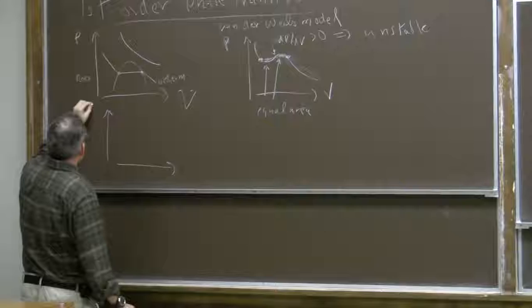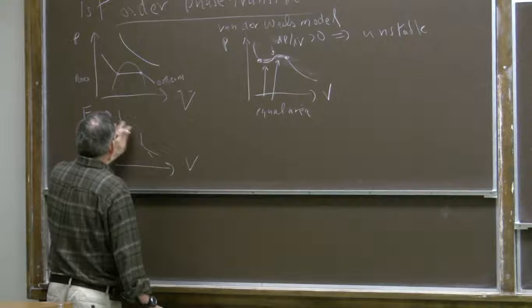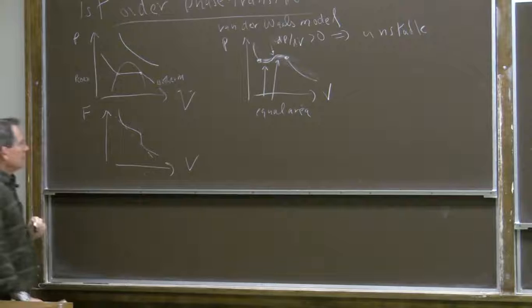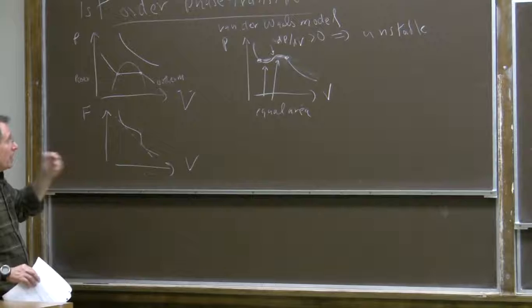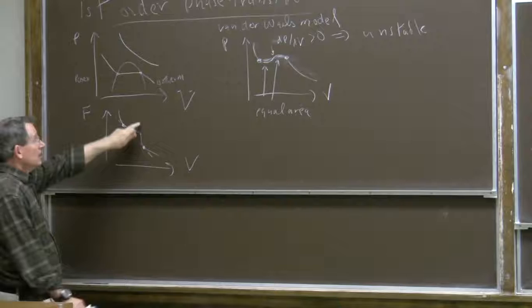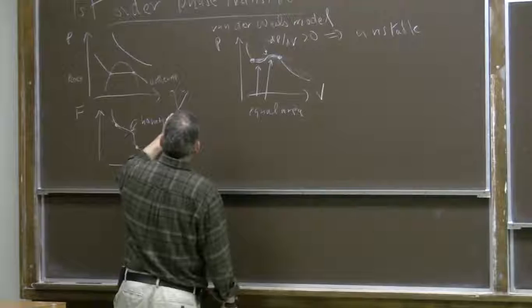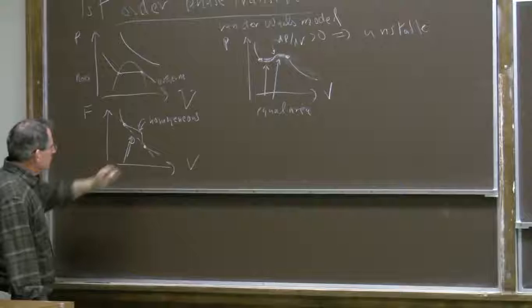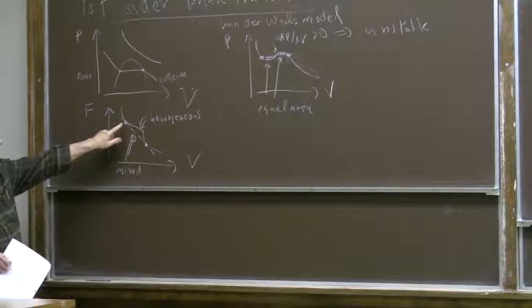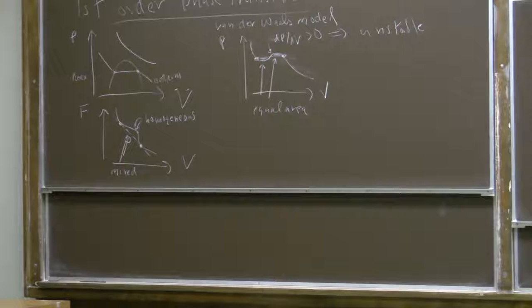In terms of how the Helmholtz free energy behaves as a function of volume, the slope — with minus the slope corresponding to the pressure — is always negative. But the Helmholtz free energy as a function of the volume changes from being concave up to concave down. If we want to minimize the free energy in this region, the straight line tangent to the curve at two points lies below the Helmholtz free energy for the homogeneous phase. The dotted line represents a mixture of the two phases; we attain lower Helmholtz free energy by mixing the gas and the liquid than by staying in the homogeneous phase. From that, we obtain the equal area prescription.